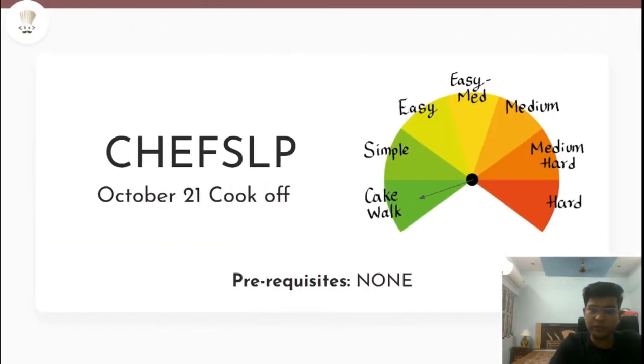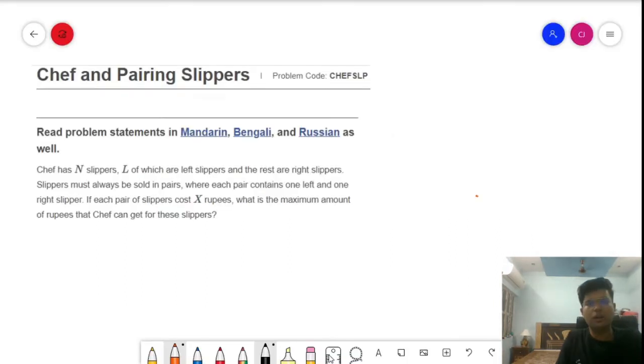The problem code is CHEFSLP. The problem is of type cakewalk and it is a part of October 21 cook-off. The prerequisite of the problem is none.